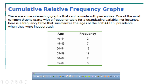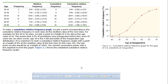Now we're going to talk about something called the cumulative relative frequency graph. One of the most common graphs is a frequency table for a quantitative variable. Here someone summarizes the first 44 U.S. presidents' ages when they were inaugurated. There were two presidents inaugurated between the ages of 40 and 44, seven between 45 and 49, 13 between 50 and 54, 12 more, and three between 65 and 69.